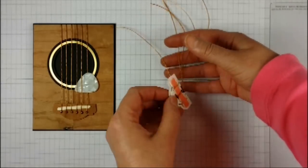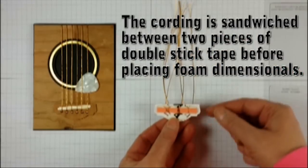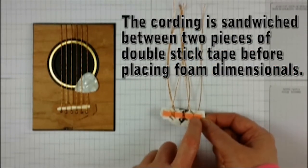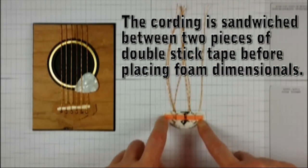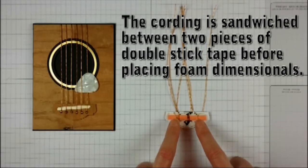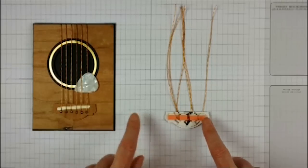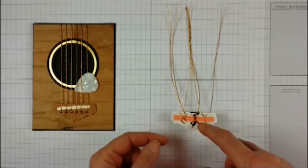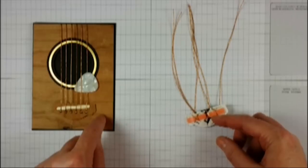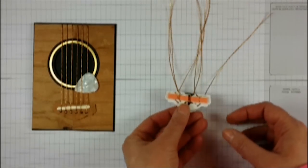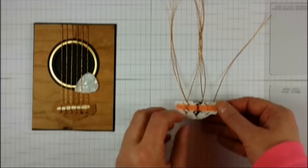On the backside after I've put in all the brads I added foam dimensionals and then I added another secondary strip of heavy-duty double stick tape. Initially the foam dimensionals stuck but then they popped off. I think this wood is very porous so I wanted to make sure it stuck and didn't come apart.